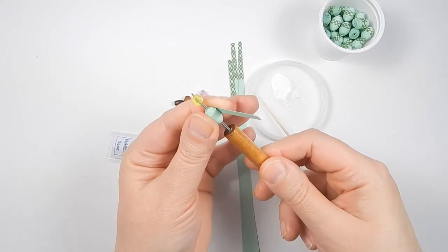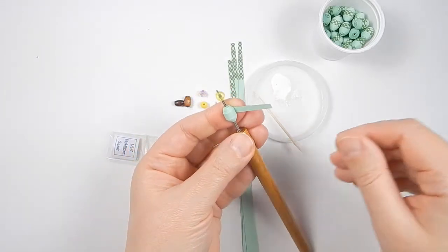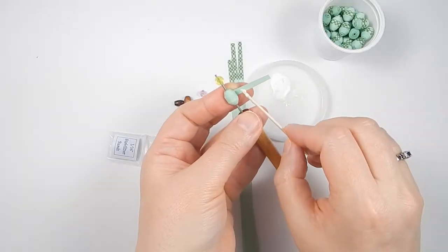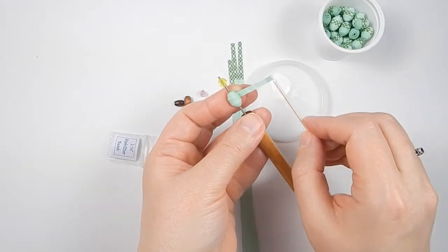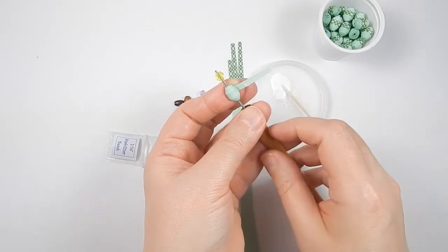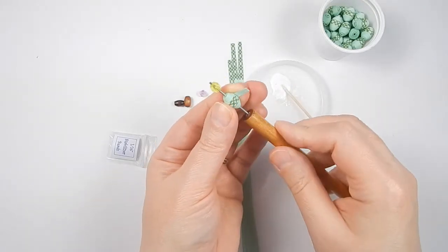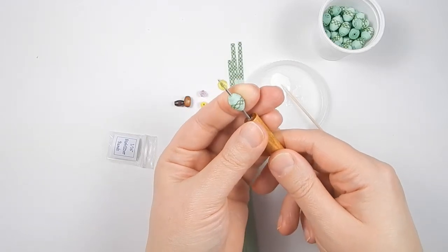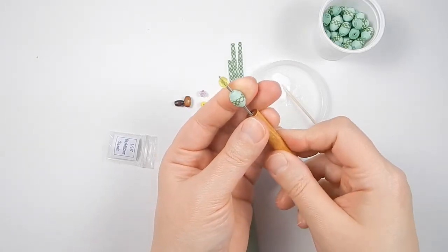Once you get to this point, you're going to go ahead and put glue on the very end so that way you can adjust it if you need to, and you're going to continue rolling. When you're done, you just hold it there a few seconds.